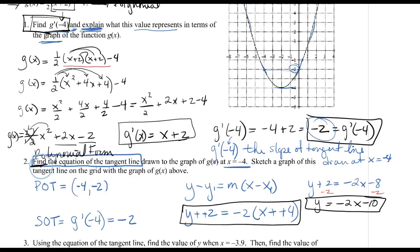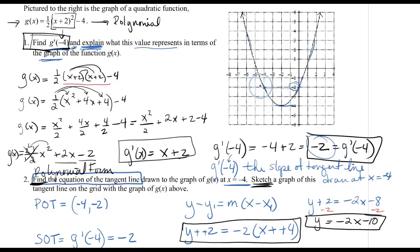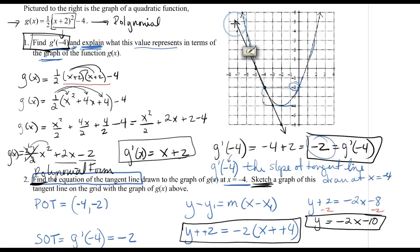That answered the first part — finding the equation. We're also asked to sketch the graph of this tangent line. My point of tangency is (negative 4, negative 2), and the slope is negative 2, meaning down 2 for every 1 over. I plot additional points using that slope and draw the tangent line through the point of tangency.